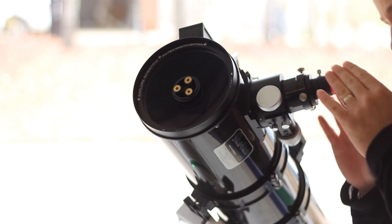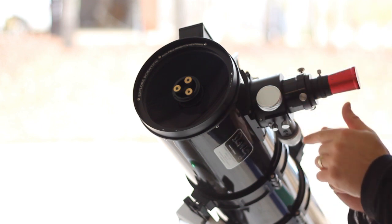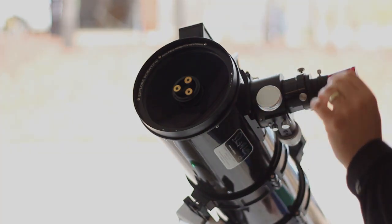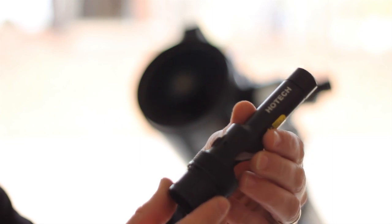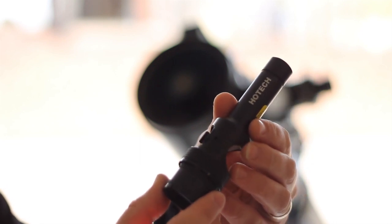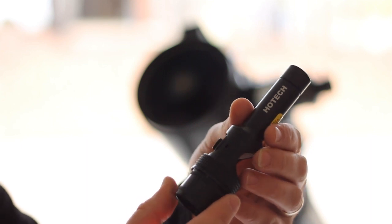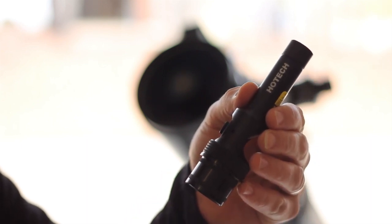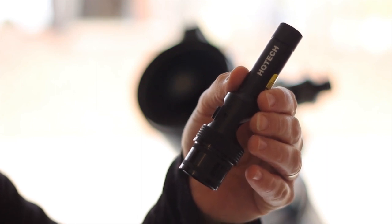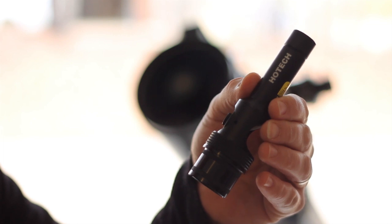Now that we've got that centered, the next thing we're going to do is pop in the laser collimator and check the alignment of the primary and secondary one more time. This is the laser collimator I use - it's the SCA laser collimator by Howie.